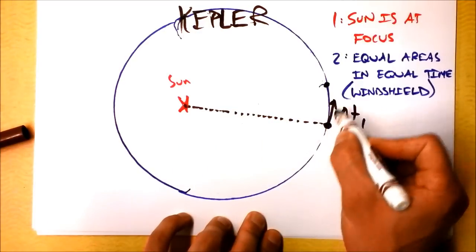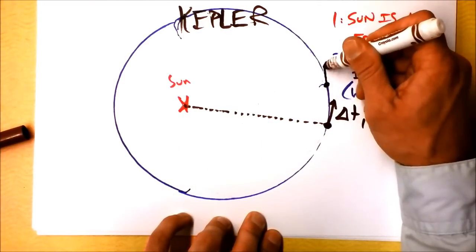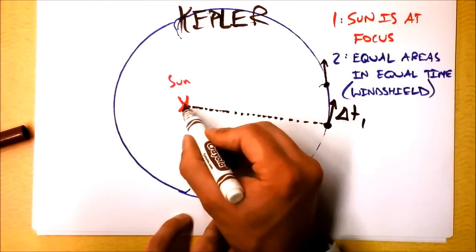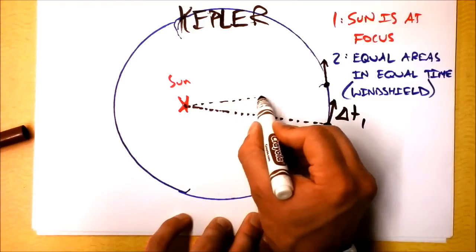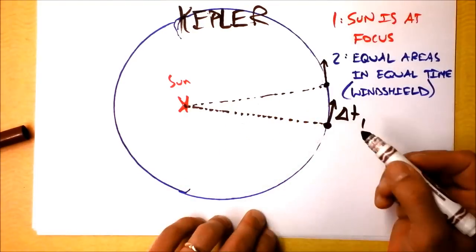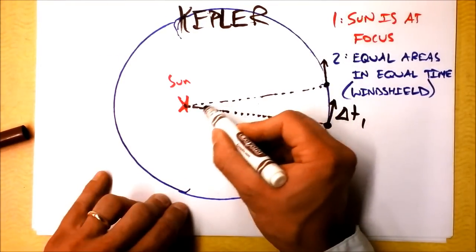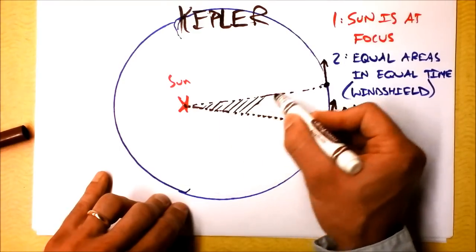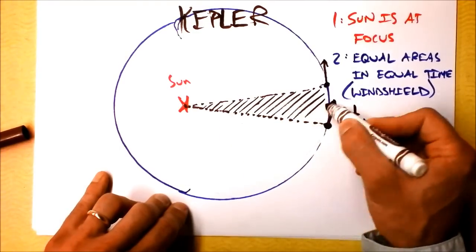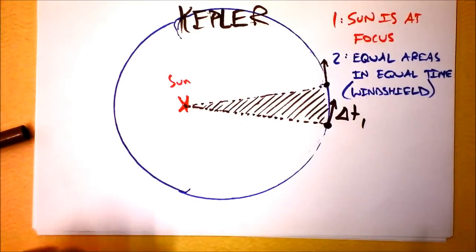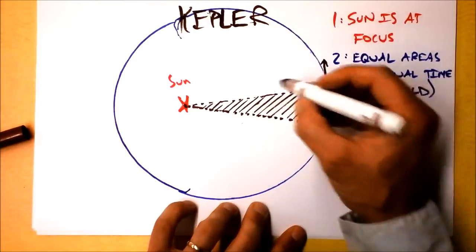The planet will have moved from here to here on its orbit. And so we can draw another windshield wiper out to the planet. And we could calculate in principle fairly easily, we could calculate this area that the planet has swept out with its windshield wipers.